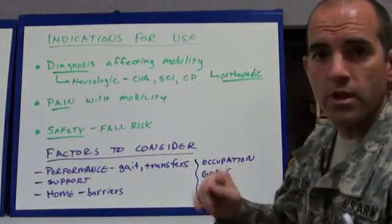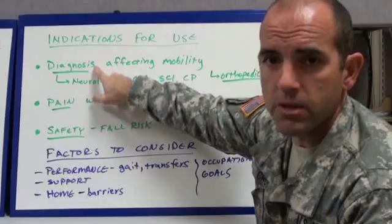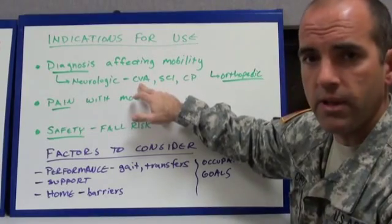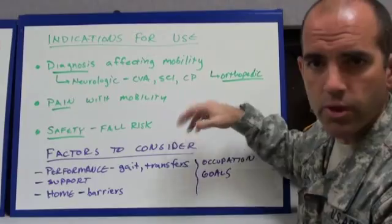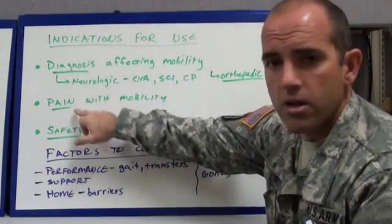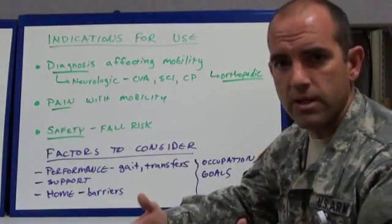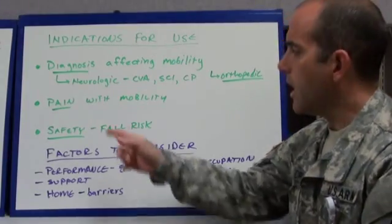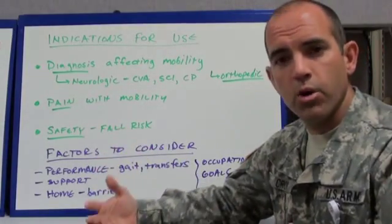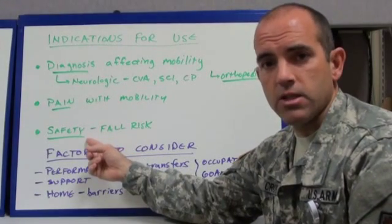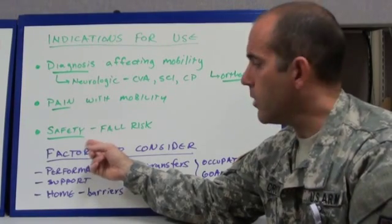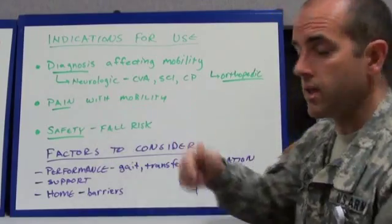Some of the indications for use of an assistive device: first and foremost, a diagnosis that's going to affect mobility. It might be a neurological diagnosis like a CVA or cerebral vascular accident, spinal cord injuries, cerebral palsy, as well as orthopedic injuries. Also, pain with mobility — if it hurts to put weight down on your foot, ankle, or knee, that's an indication. Also, if somebody is a fall risk with poor balance, and a provider thinks a walker or cane would help decrease their fall risk, that's a great indication for use.